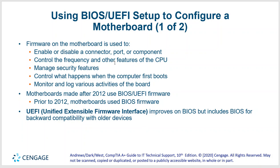Firmware on the motherboard is used to enable or disable a connector, port, or component. You might want to switch off the built-in network card, or turn off USB ports so no one can use them for security reasons. You can also control the frequency and other features of a CPU — for example, overclocking your CPU, making it run faster than what the manufacturer recommends. If you're doing that, put a bigger heatsink and fan on there, or consider liquid cooling.